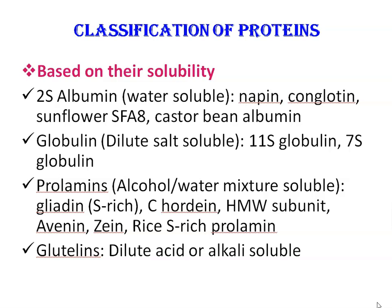Prolamines are alcohol-and-water-mixture-soluble proteins. Examples of prolamines include gliadin, S-rich prolamine, C-hordein, HMW subunit, avenin, zein, and rice S-rich prolamine. The fourth type is glutalins, which are dilute acid or alkali-soluble proteins.